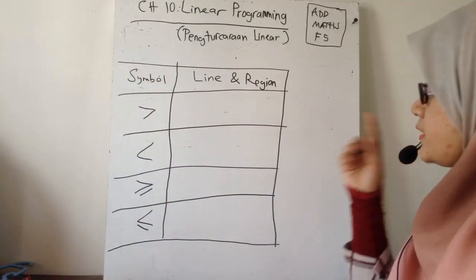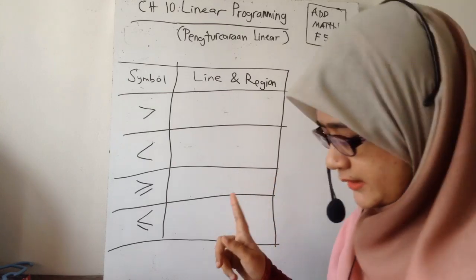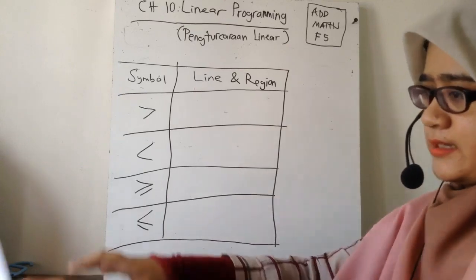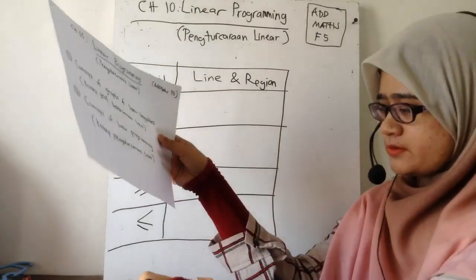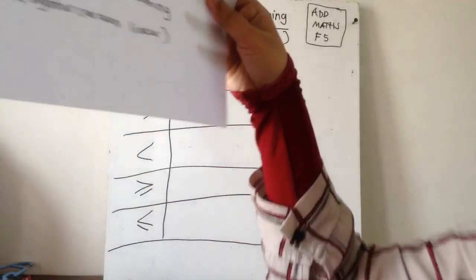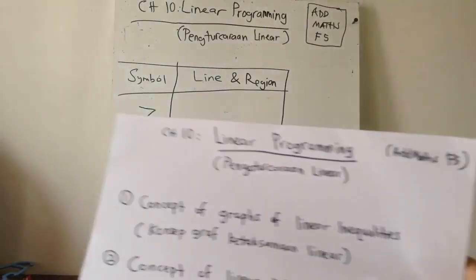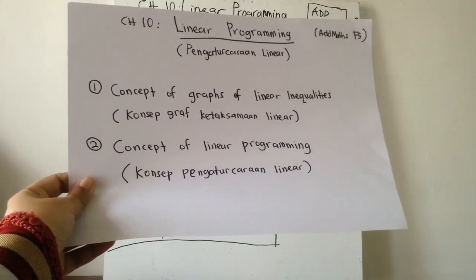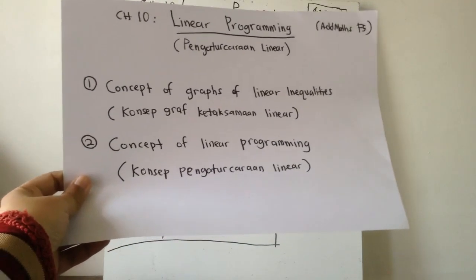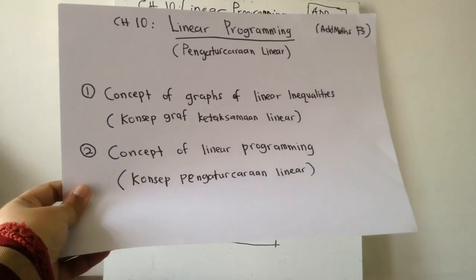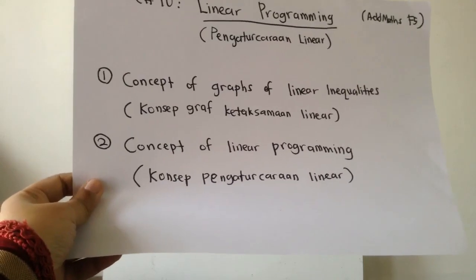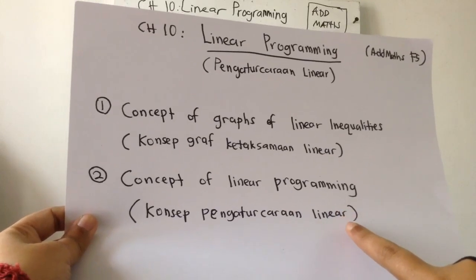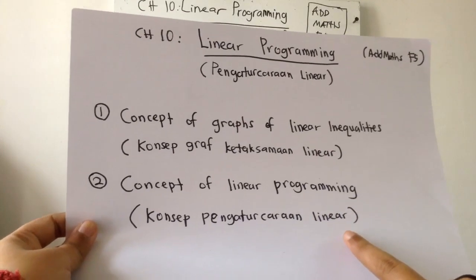tajuk yang terakhir sekali bagi Form 5 iaitu Linear Programming. Tajuk dia pengatur caraan linear kalau dalam BM. Untuk tajuk ni, dia ada dua subtopik. Iaitu satu, konsep graph of linear inequalities - konsep graf ketaksamaan linear - yang kita nak cover hari ni untuk subtopik yang pertama. Dan yang kedua adalah konsep of linear programming, iaitu konsep pengatur caraan linear.